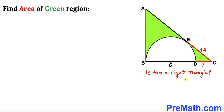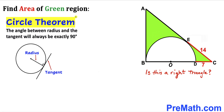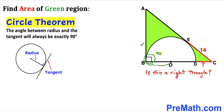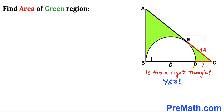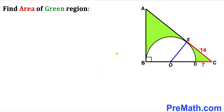Is this a right triangle? Recalling the circle theorem: the angle between the radius and the tangent is always 90 degrees. In our case, this is the radius and this is the tangent line, so this angle is 90 degrees. Therefore, triangle ABC is indeed a right triangle.